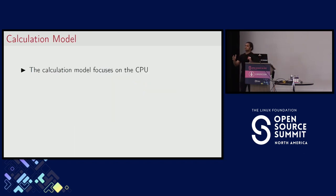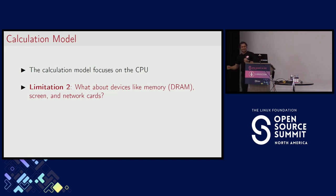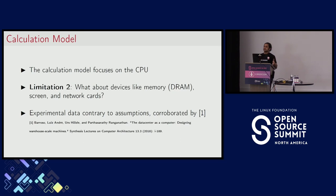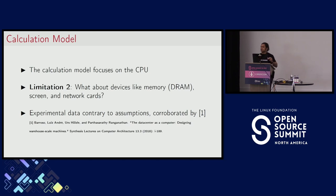Second, our calculation model focuses only on the CPU. We used the RAPL interface and got 15 watts, but we did not think about other devices in the system: DRAM, the screen backlight, the network card — they're all drawing power. We have experimental data demonstrating that very often these devices can dominate your overall power consumption, especially if you have a GPU workload, which can easily eclipse your entire CPU's TDP. Our experimental analysis is also corroborated by research published in other venues.